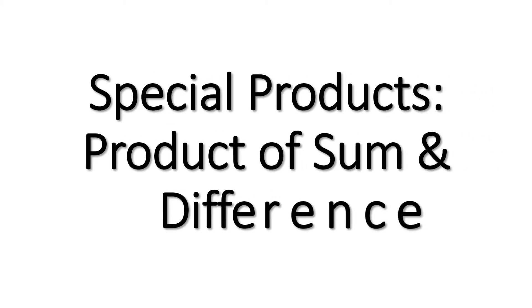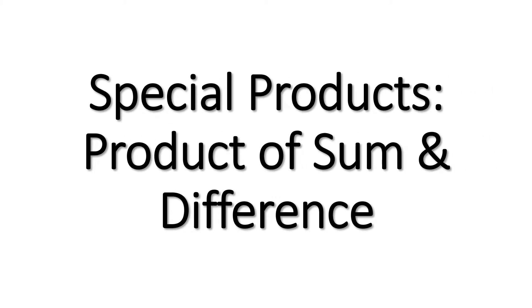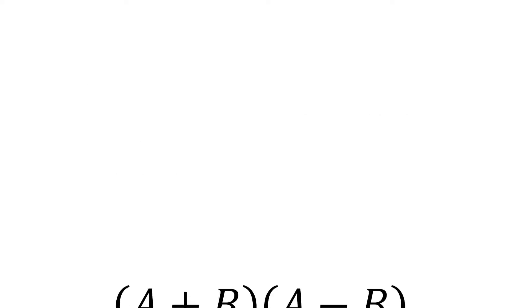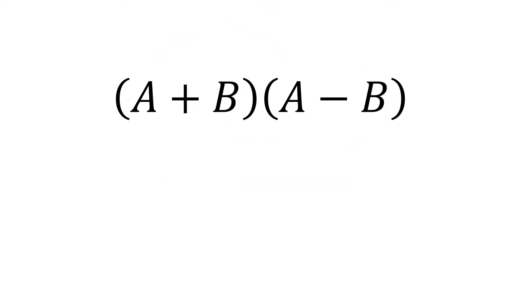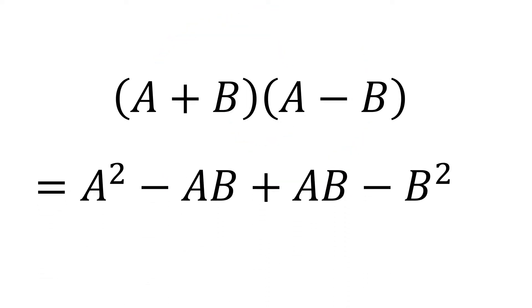In this video, we're going to learn a shortcut in multiplying a special product, the product of sum and difference. Let's say we have a plus b times a minus b. Now using the FOIL method, this is equal to a squared minus ab plus ab minus b squared.